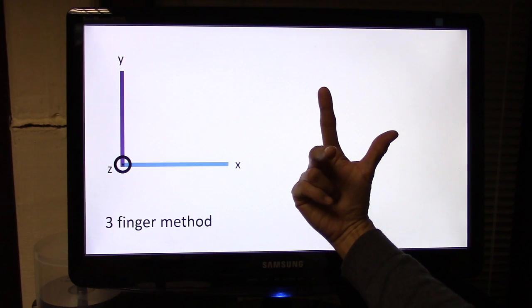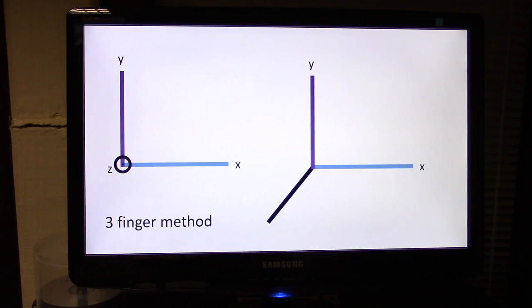So Z is sticking out of the screen, but the more common way of representing the axes is like this.